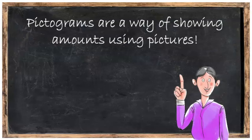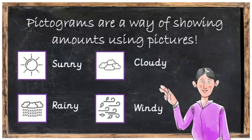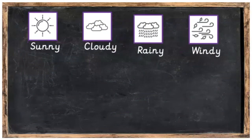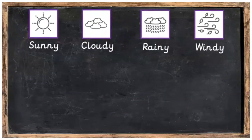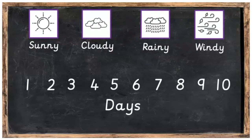So what are pictograms? Pictograms are a way of showing amounts using pictures. Here are some pictures of different types of weather. We've got sunny, cloudy, rainy and windy. So let's say we wanted to record the weather each day for 10 days — we could use these pictures.